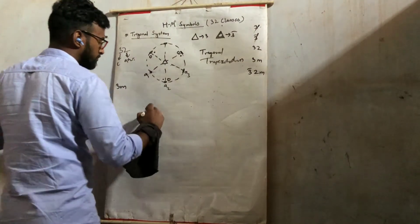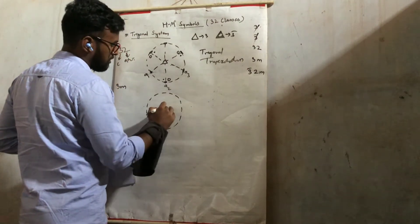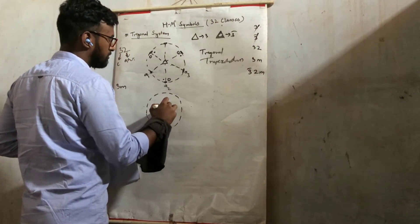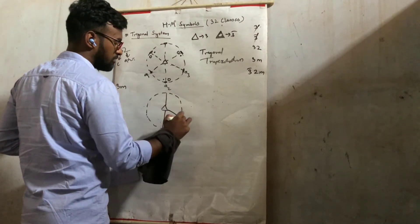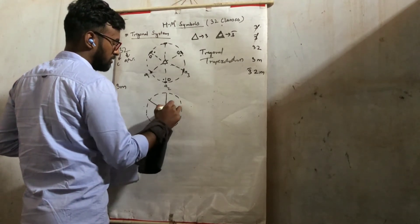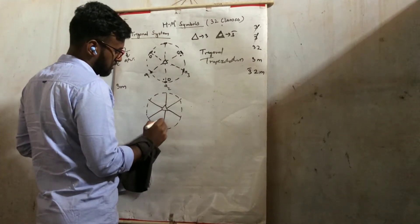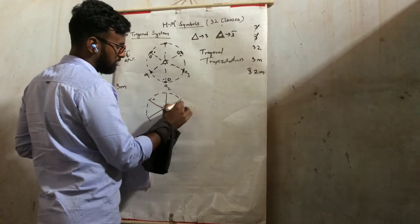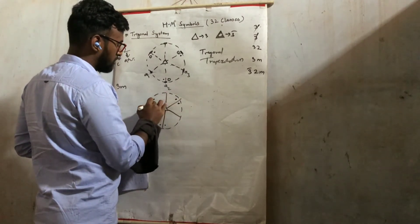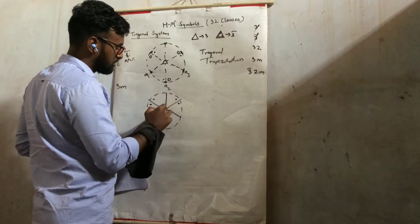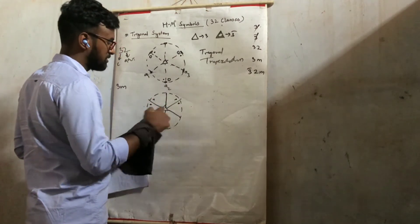3,2 done. Now 3M. Similar — only the change is that the 2-fold axes will be replaced by mirror planes. So this will be mirror planes. First the 3-fold operation, then the mirror plane operation. About this axis also we have a mirror plane. Mirror position satisfied.